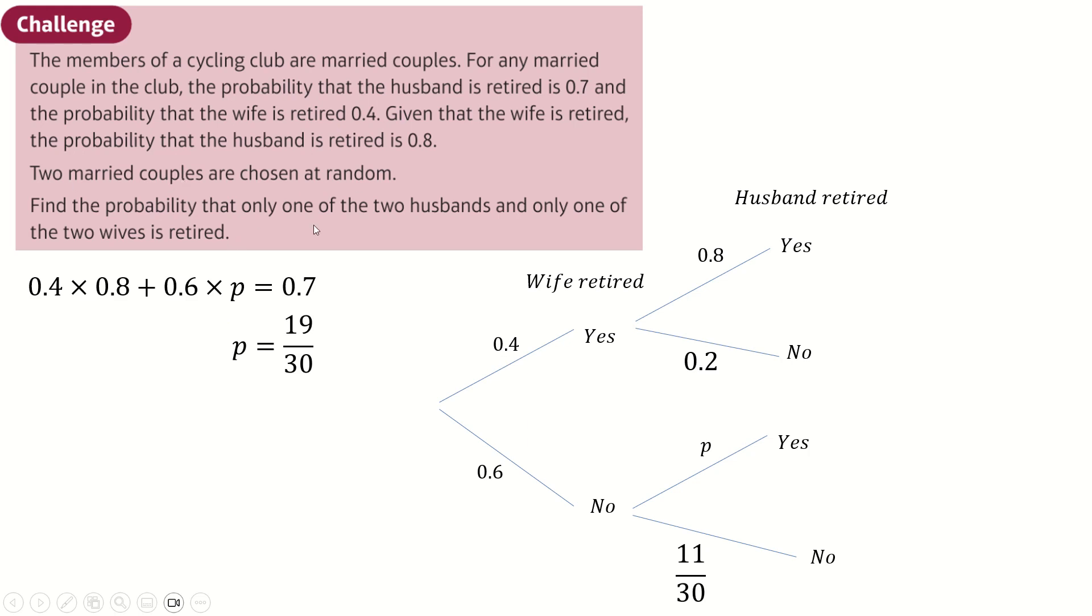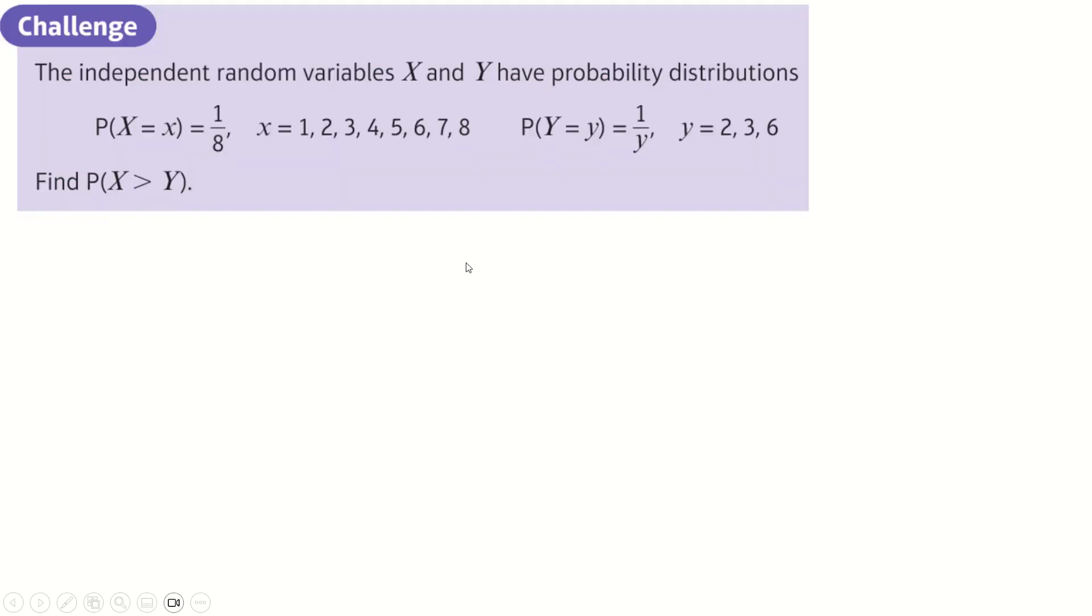Two married couples are chosen at random. Find the probability one of the two husbands and one of the two wives is retired. There's a few ways to do this. Your first couple could be retired, retired, and the second couple not retired, not retired, because that's one retired and one not retired from each gender. Or you could be wife retired, husband not retired is the first couple, and wife not retired, husband retired for the second couple, which I think is what I've done here. Except also, you could swap the couples over. And so, we actually get two results. You can type all this in and add up the two results. You get this in total.